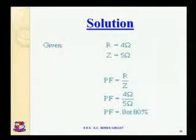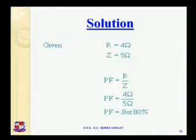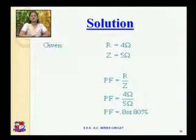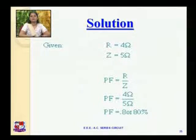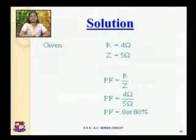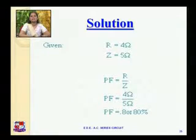Now we have to find the power factor of the circuit. Resistance of the circuit is already given which is four ohm, impedance of the circuit is already known which is five ohm. So the power factor equation is cos φ equal to R by Z. Power factor is equal to four by five, which is equal to point eight. And this is the inductive circuit, so it is a lagging power factor. So point eight lagging is the power factor for the given circuit.